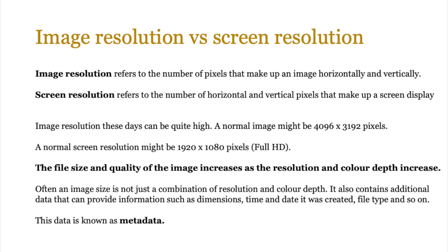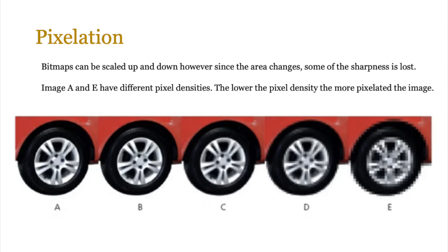An image file size is not just a combination of resolution and color depth — it also contains additional data called metadata, which provides information such as dimensions, timestamps, date stamps, where the image was created, and the file type. Another thing to be aware of is pixelation. Bitmaps — images created from pixels — can be scaled up or down. However, when you scale up a small, low-resolution image, some sharpness is lost. The lower the pixel density, the more pixelated the image, and that's how quality suffers when scaling up bitmaps.